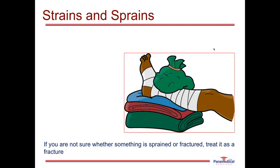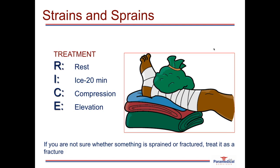Sprains and strains involve ripping or tearing of muscles, tendons, or ligaments, and are treated the same way using the mnemonic RICE. R is for rest. I is for ice — apply ice or a cold pack for 20 minutes, then reassess and continue at 20-minute intervals to reduce swelling. C is for compression — apply a compression bandage to reduce swelling and provide immobilization. E is for elevation, which limits inflammation and swelling to reduce pain. If unsure whether an injury is a strain, sprain, or fracture, always treat it as the worst case scenario — a fracture.